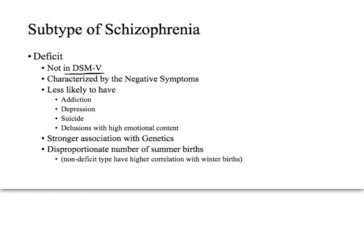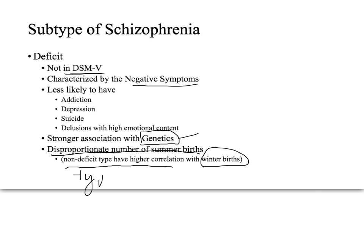The deficit subtype is associated with a disproportionate number of summer births. By contrast, the non-deficit, typical type has a higher correlation with winter births and is associated with flu epidemics — meaning the typical type is more associated with environmental factors.